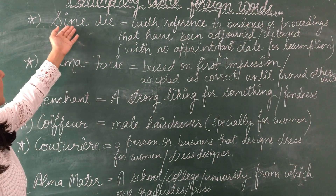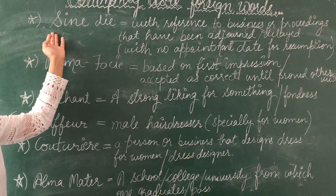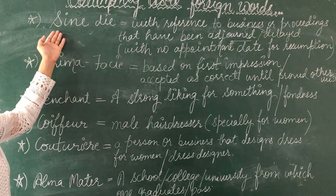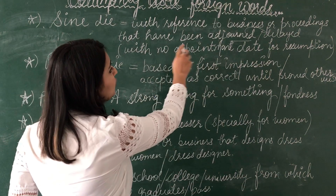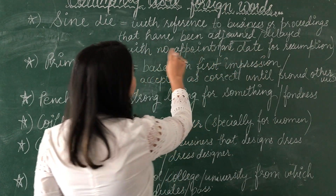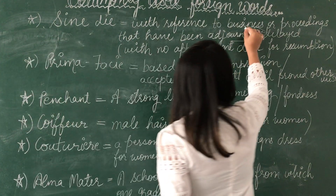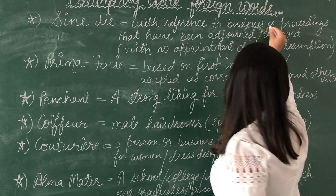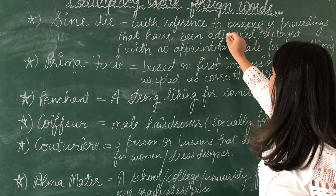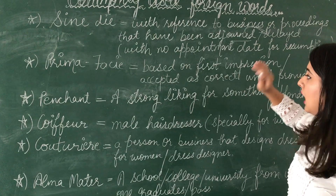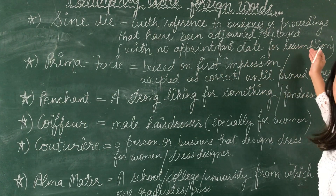The first new word is 'sine die'. We pronounce it like 'sine die'. Sine die means with reference to business or proceedings that have been adjourned — adjourned here means delayed — with no appointment date for the resumption.